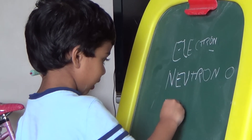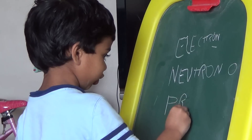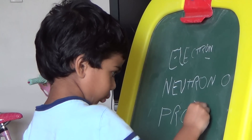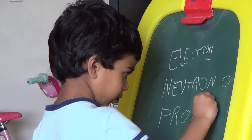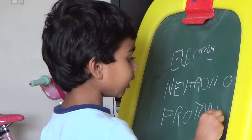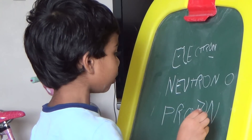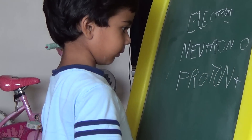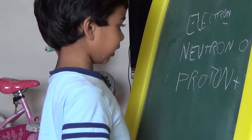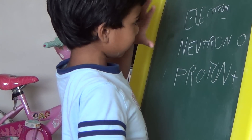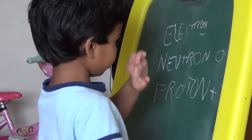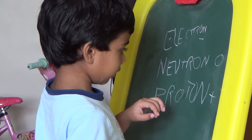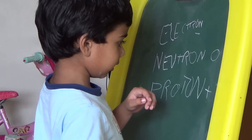And a proton has a plus charge. The proton charge is plus. So: electron is minus, neutron is zero, proton is plus.